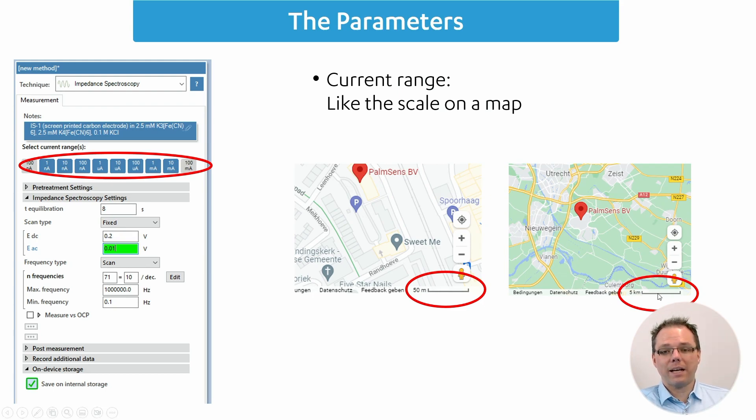But we cannot see any neighboring cities, so if you wanted to know where Utrecht is, you would have to zoom out. The scale bar gets bigger. Now this distance is 5 kilometers and we can see that there are also other cities around us. However, we cannot see in which street the Palmsens headquarter is anymore.